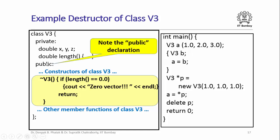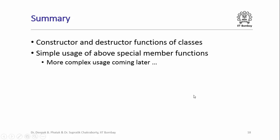Note the public declaration for the destructor — it is needed because the destructor is called from the function main when objects are deallocated. In summary, in this lecture we looked at constructor and destructor functions of classes and saw simple usage of these functions in C++ programs. We will see more complex usage later. Thank you for your attention.